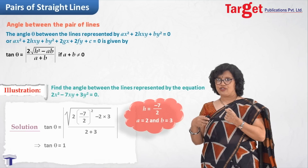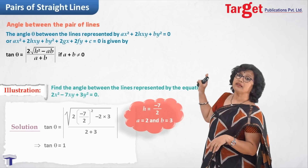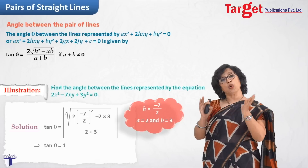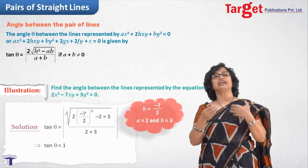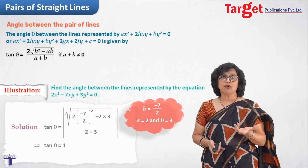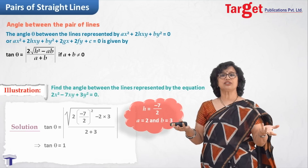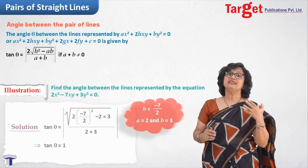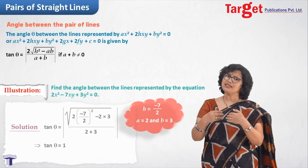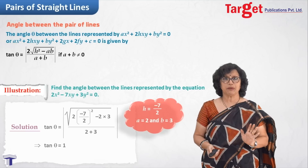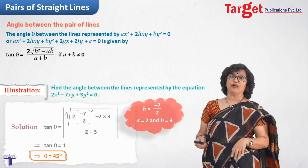Note that the x² term has coefficient 2 and the y² term has coefficient 3 — they are different — which already hints that the lines are not perpendicular, so we correctly applied the tan θ formula. If you ever observe that the coefficients of x² and y² are equal, that means the lines are perpendicular and you can state that directly without applying the formula. So tan θ = 1 leads to θ = 45°.